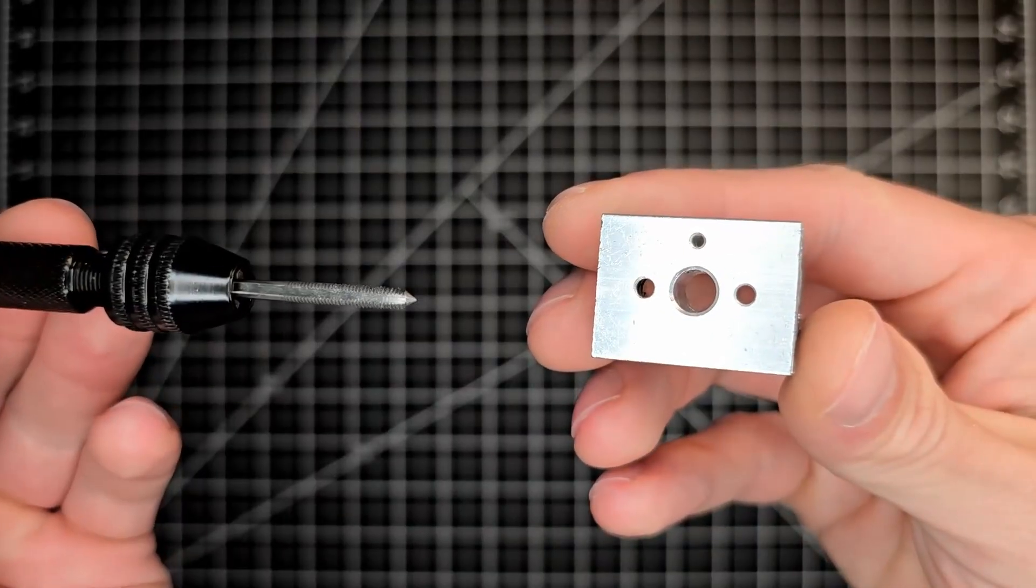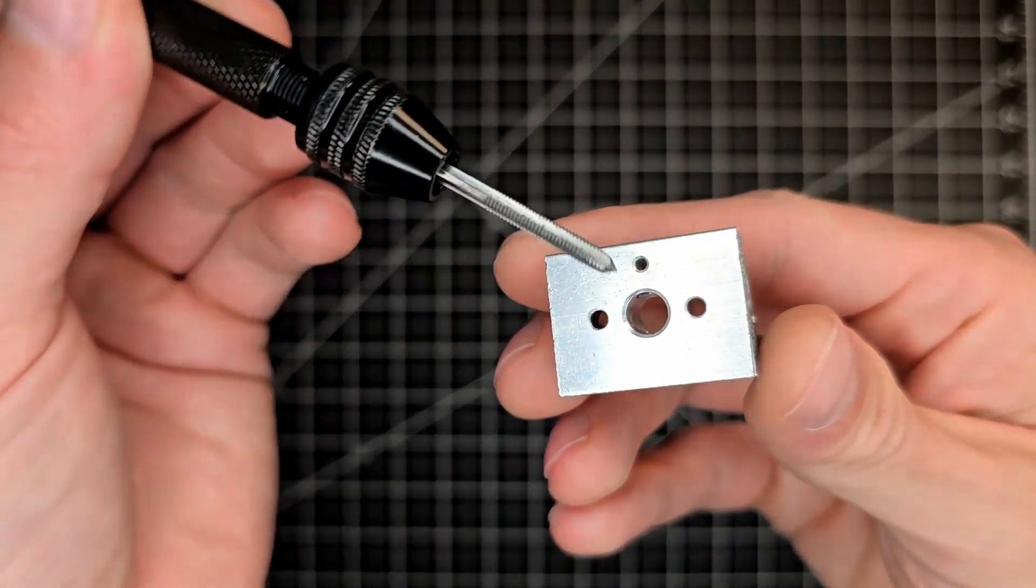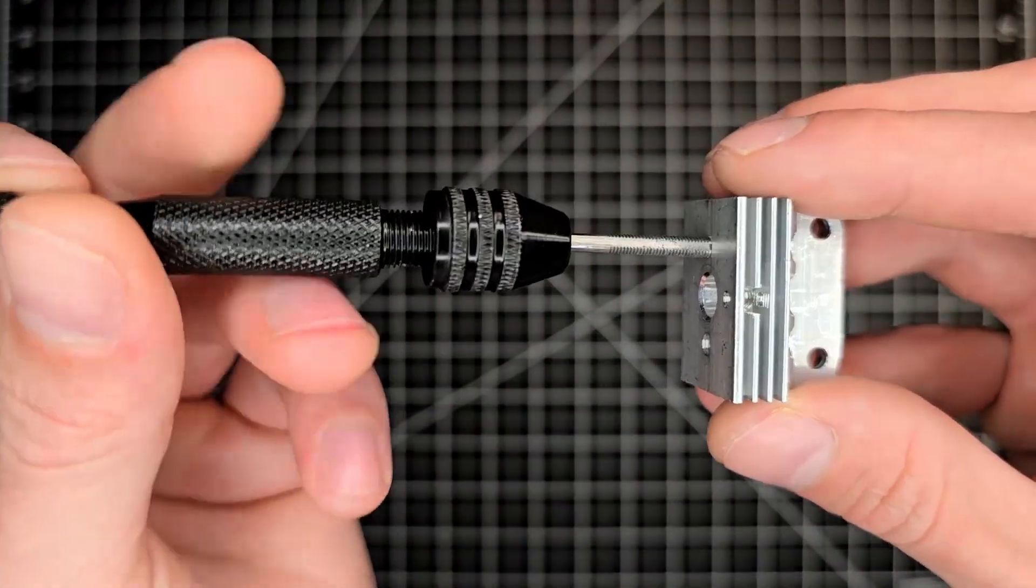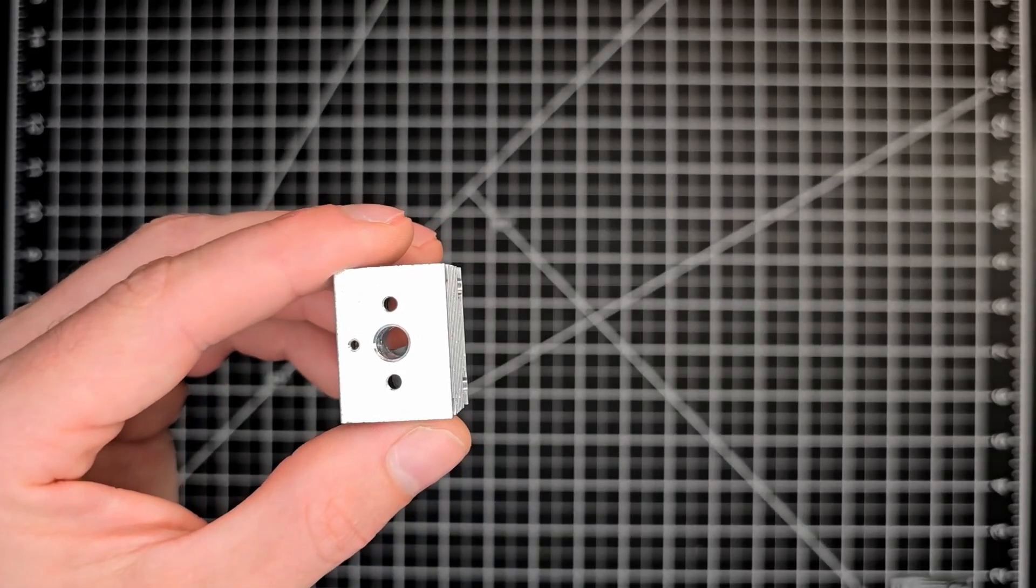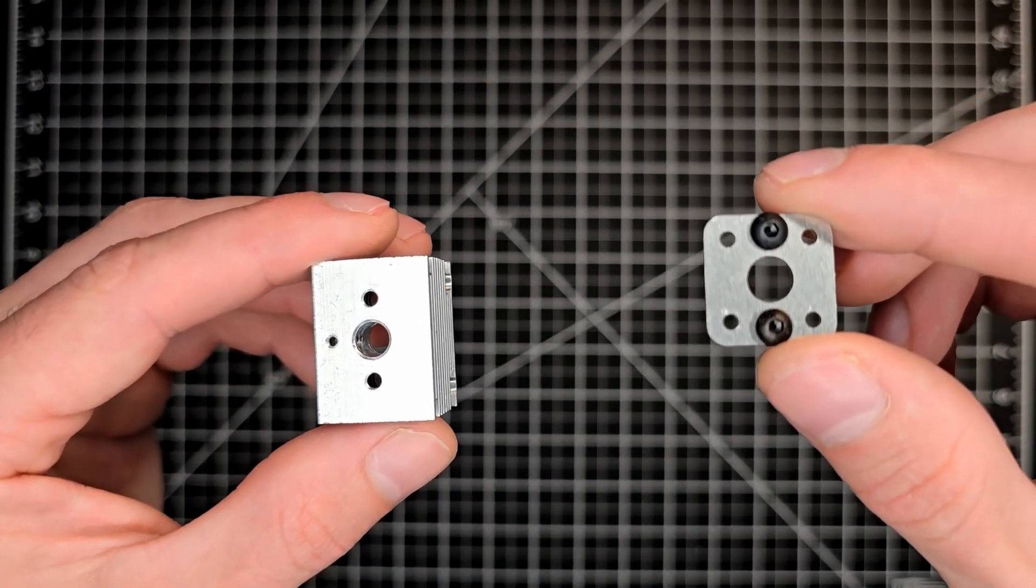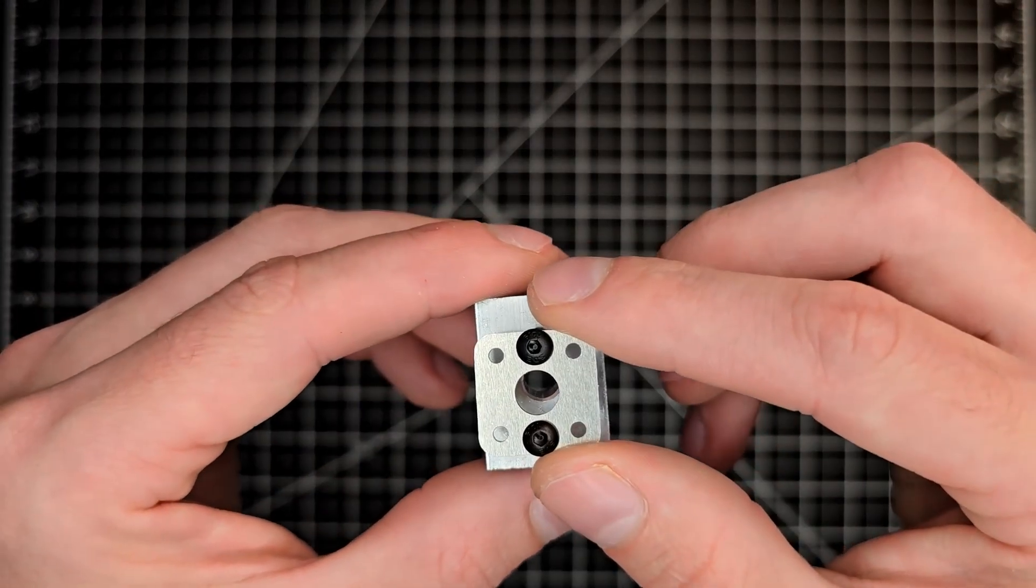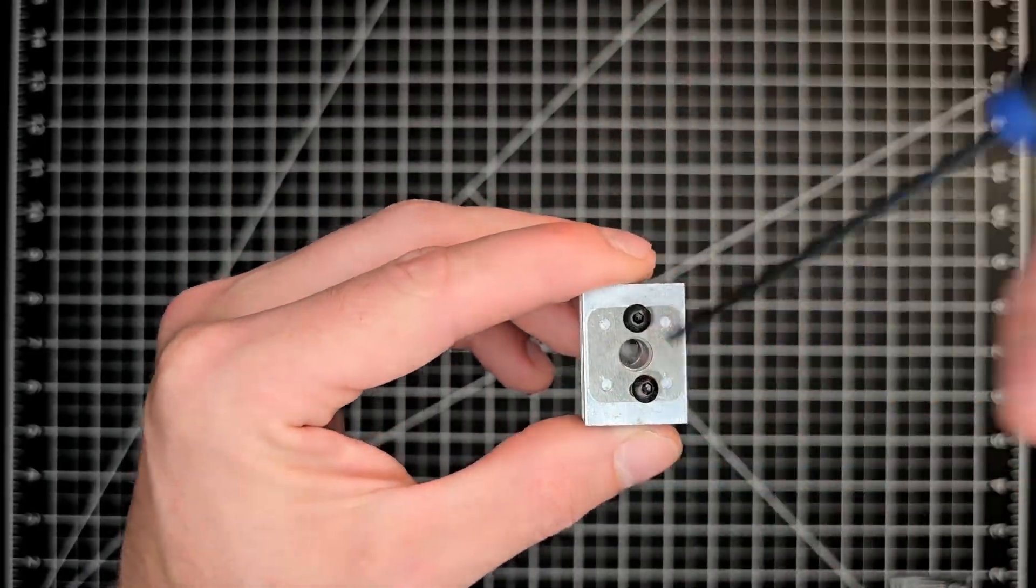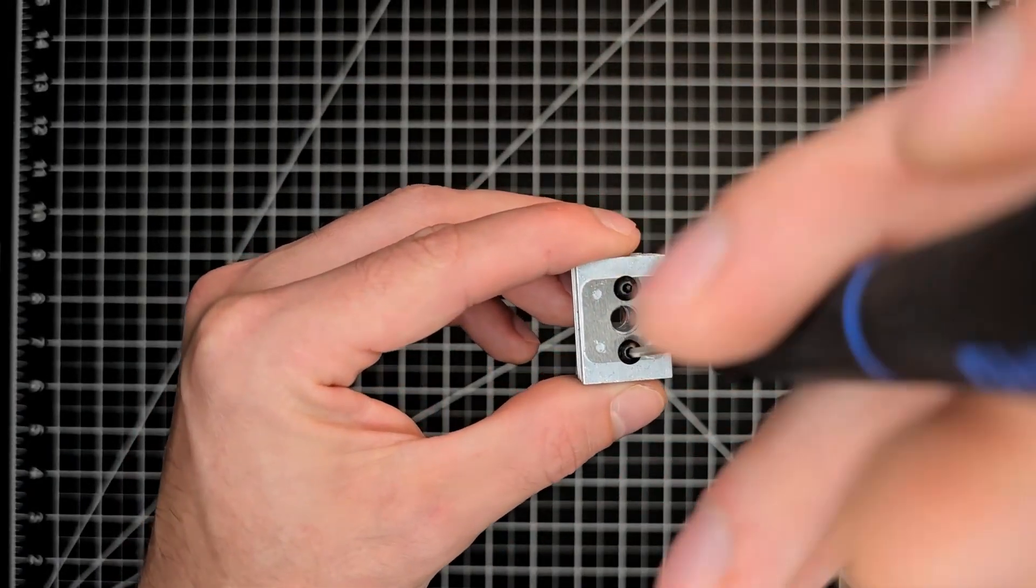With the two holes on the bottom of the Heat Sink use a 3mm tap, run it perpendicular to that surface, get some good threads, and reverse it out so you don't pull them out. Now that we've made the necessary modifications to the Heat Sink and the adapter plate, we're going to go ahead and secure that to the bottom of the Heat Sink with the button head screws. Like so.